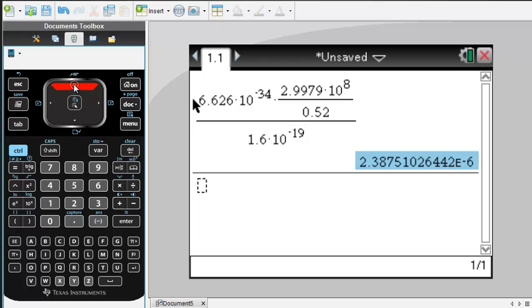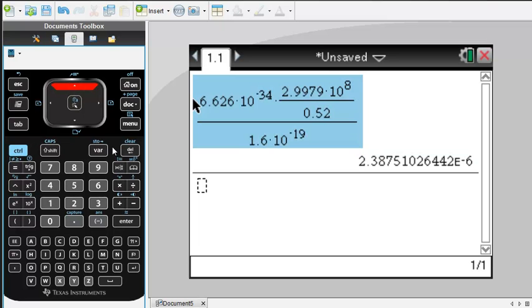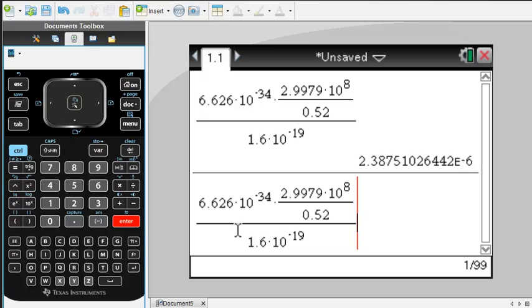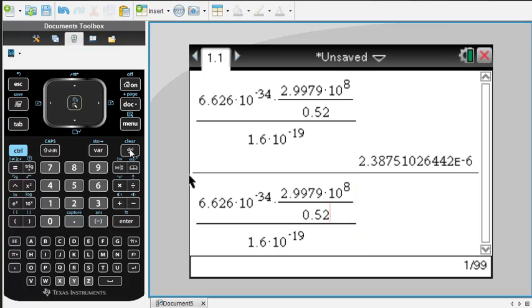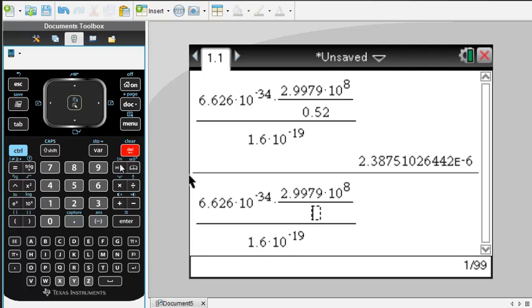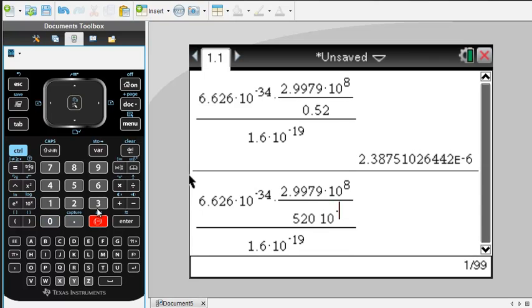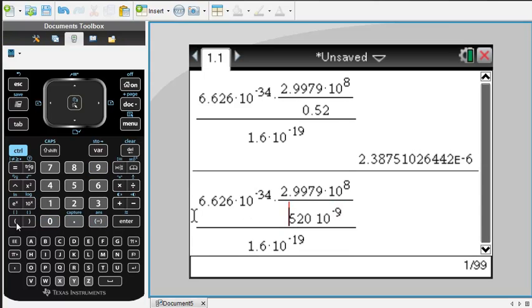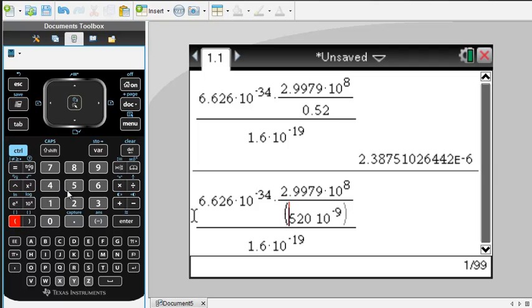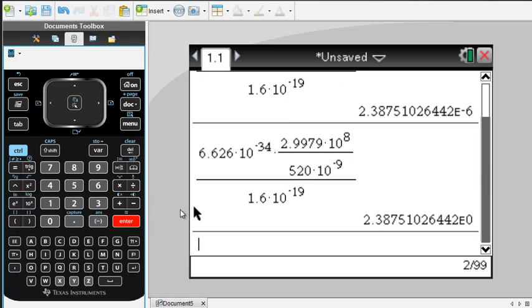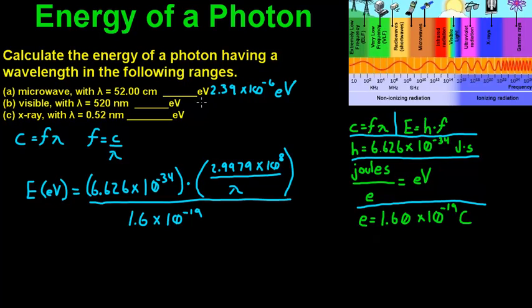For the second part, all we're going to do is change that, so we need 520 nanometers, so 520 times 10 to the negative 9th. That looks pretty good, and that's going to leave us with 2.39. For the second part, for visible light, visible light produces 2.39 electron volts.